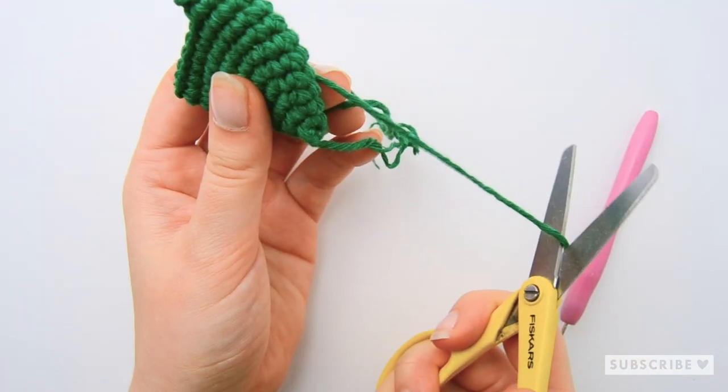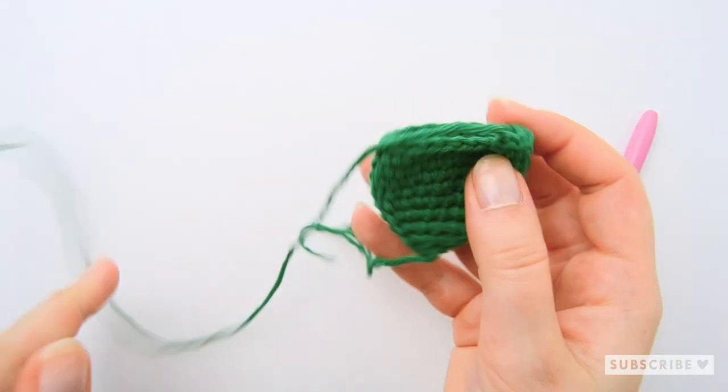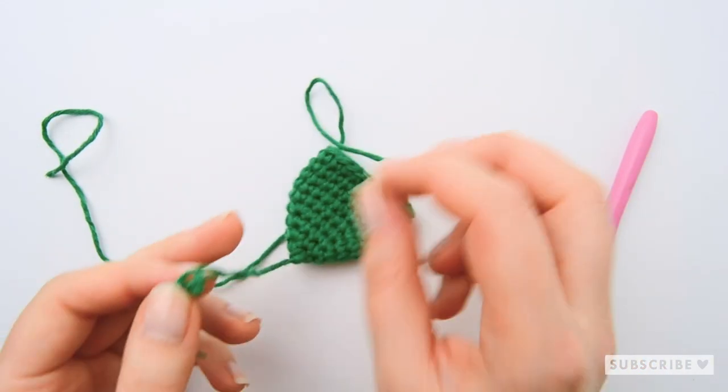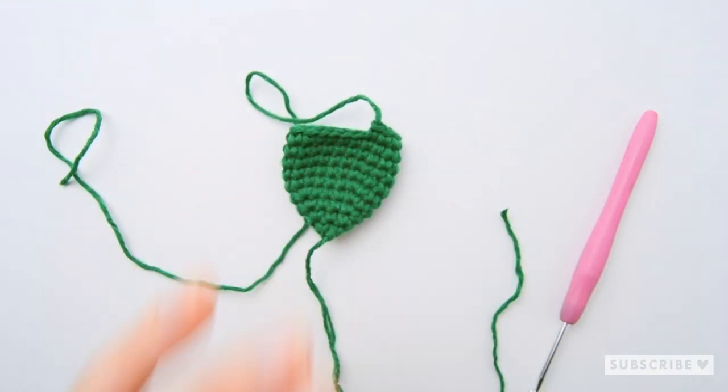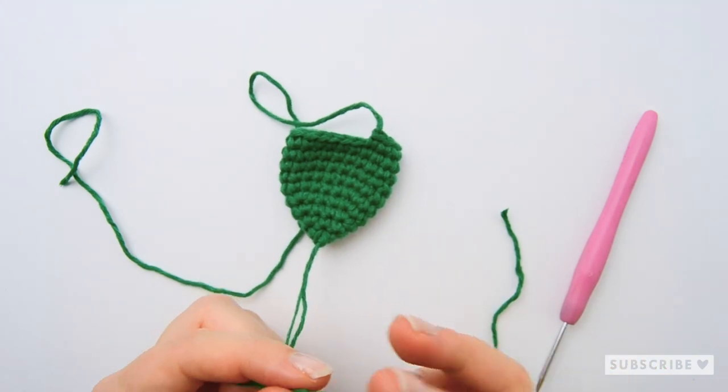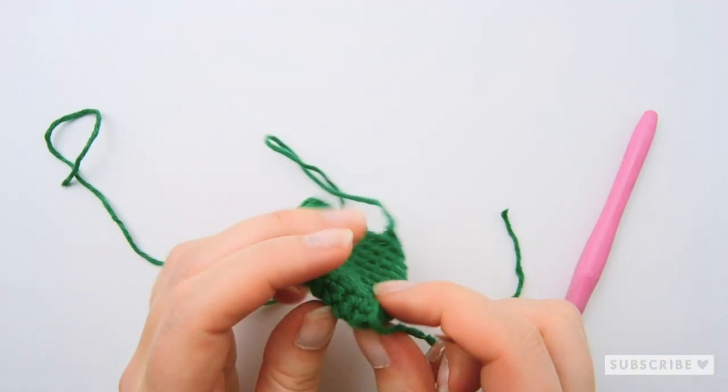Now we just cut off the yarn and weave in the first yarn end, leave the second one so that we have something to attach our ear to the head of our amigurumi with. And after this, you just make a second one because we need two ears for our amigurumi.